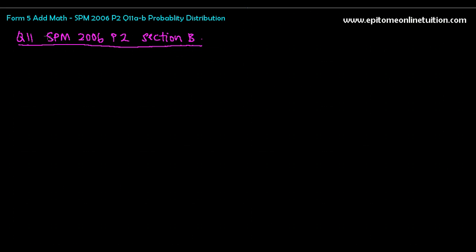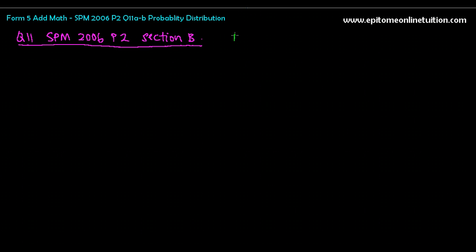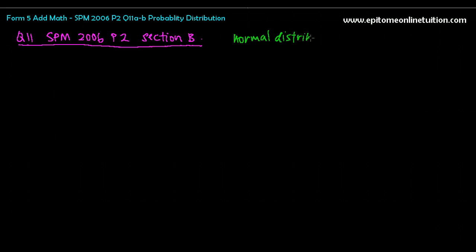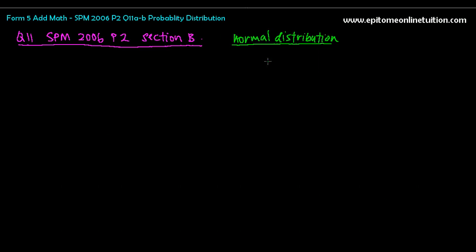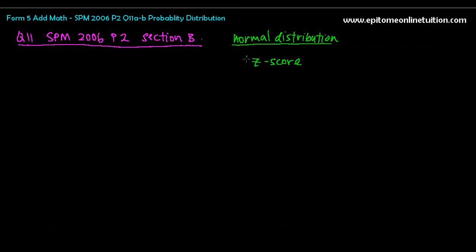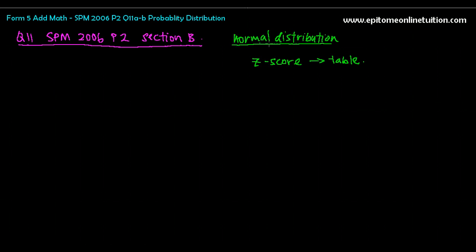When you see the keyword normal distribution, you can immediately tell that this question requires you to use the Z-score. Remember, you have to convert to Z-score. And then, this question will require you to read from the table. The keyword is from the word normal distribution. That's how you know. Now let's move on. It has a normal distribution with a mean of 5.8 and a standard deviation of 1.5.